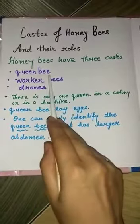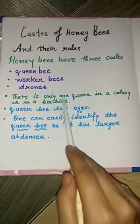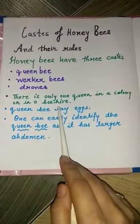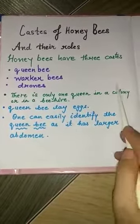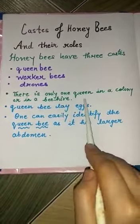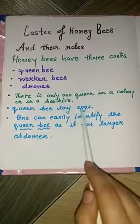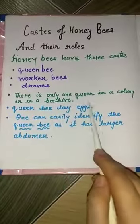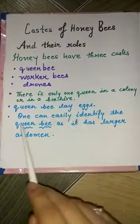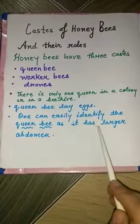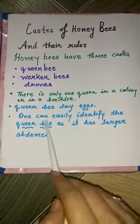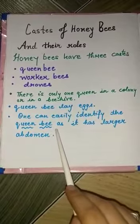The first is queen bee. There is only one queen in a colony, which is a group of bees. The role of queen bee is to lay eggs. One can easily identify the queen bee as it has a larger abdomen, comparatively large as compared to other bees.